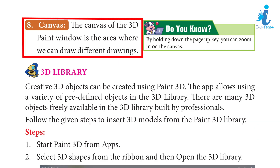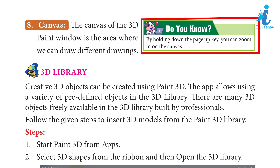8. Canvas: The canvas of the Paint 3D window is the area where we can draw different drawings. Do you know? By holding down the Page Up key, you can zoom in on the canvas.